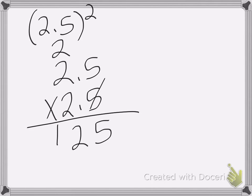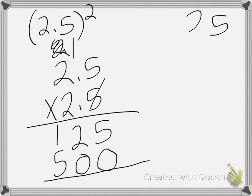Done with that one. Put my 0 down here. 2 times 5 is 10, carry my 1. 2 times 2 is 4, plus 1 is 5. Now we're going to add it up. 5 plus 0 is 5, 2 plus 0 is 2, and 1 plus 5 is 6. So my answer is 6.625.